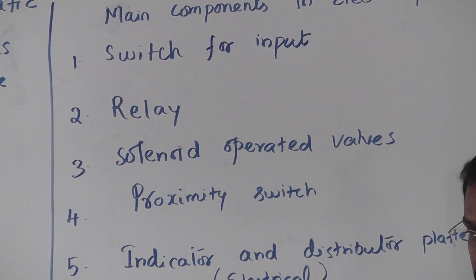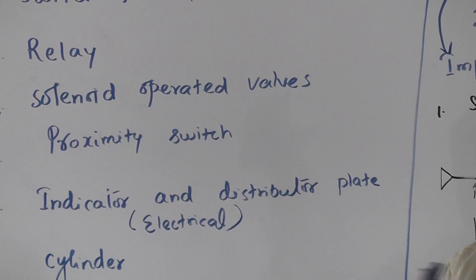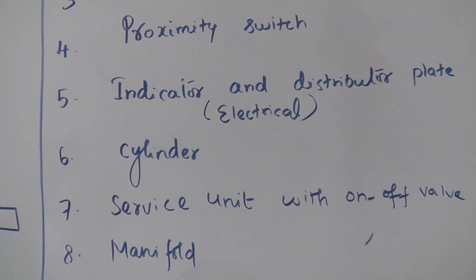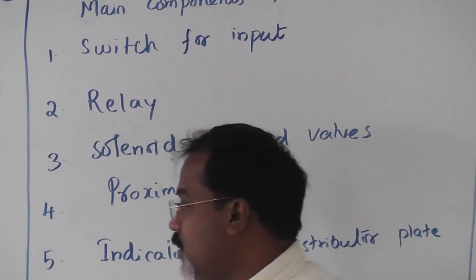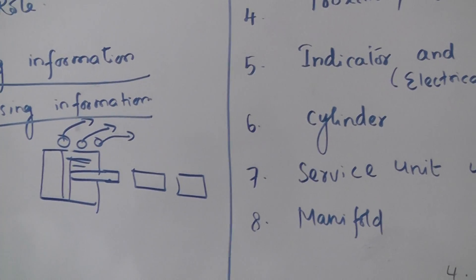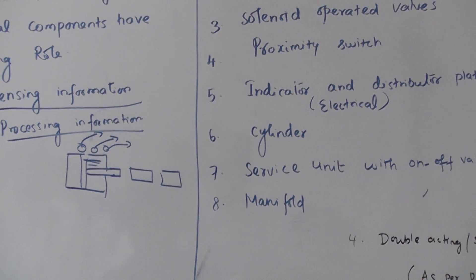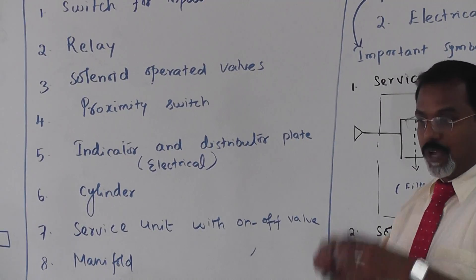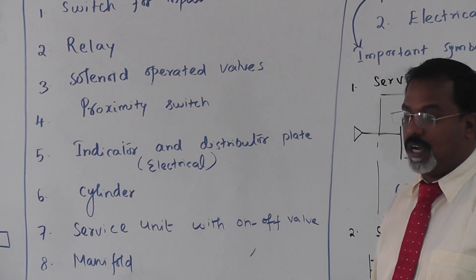The solenoid operated valve works on solenoid principles — there is a spring-loaded plunger. When you give 24 volts, the spring-loaded plunger moves and the spool attached to it gets movement, operating the valve. Proximity switches are useful for finding the position of the piston. Indicators with LEDs glow when an electrical signal passes, so you can identify whether the signal is passing from one place to another and whether it is distributed to all circuits.